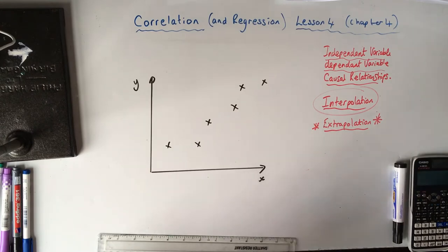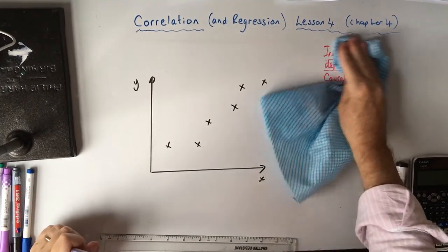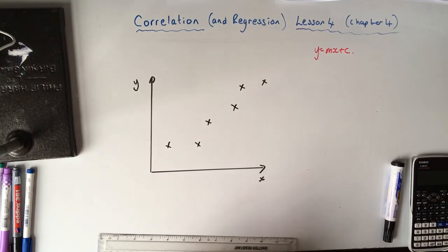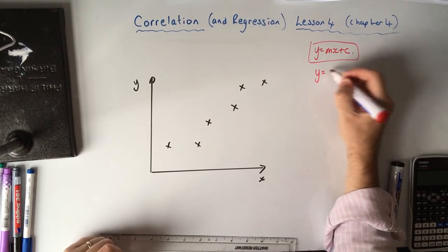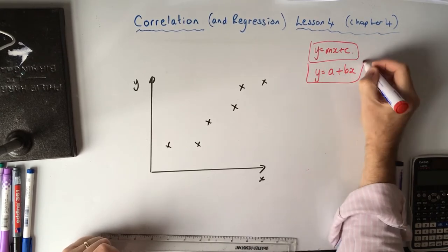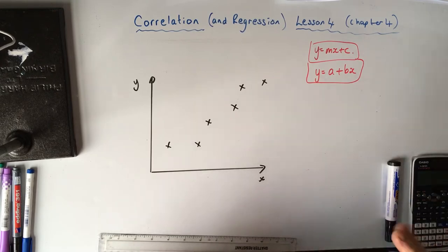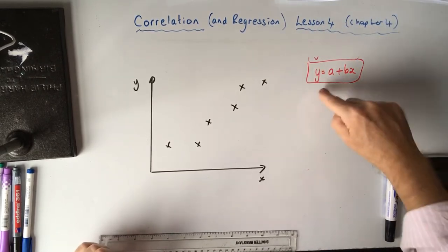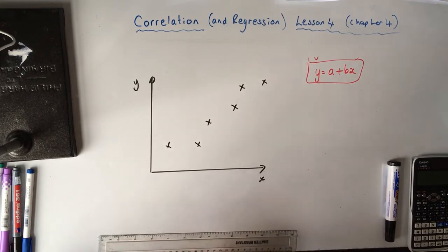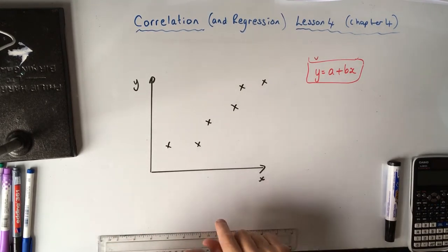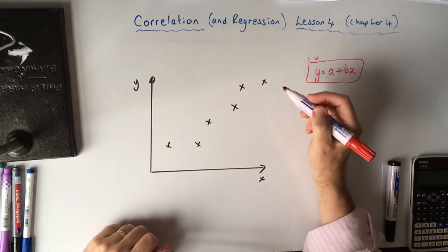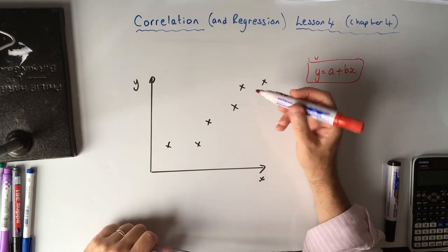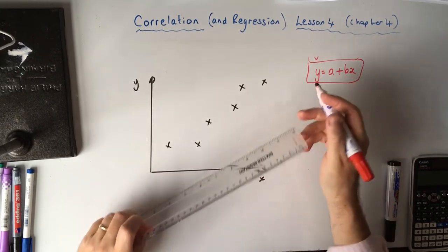A regression line is effectively just Y = mx + c. But it's not written in that form — C is written first, so it's written as Y = a + bx. You can see it's the same thing — it's a linear line, and when you see it written as Y = a + bx, you know it's referring to a regression line. There's a formula that you do not need to use or learn, but what it does is give you a Y = mx + c.